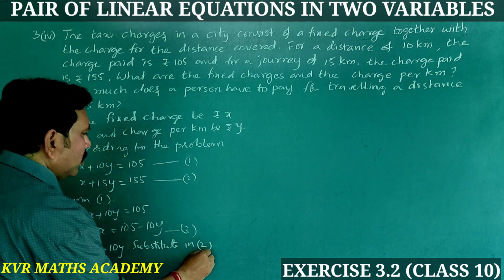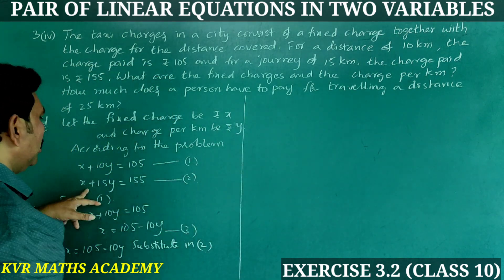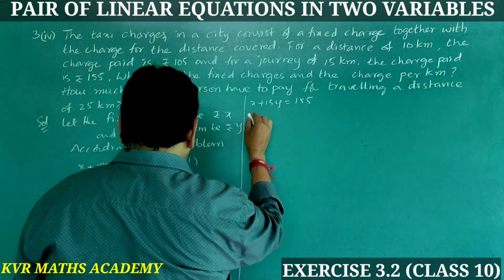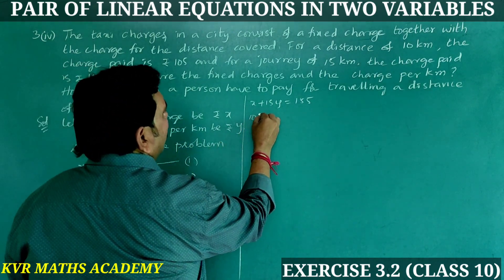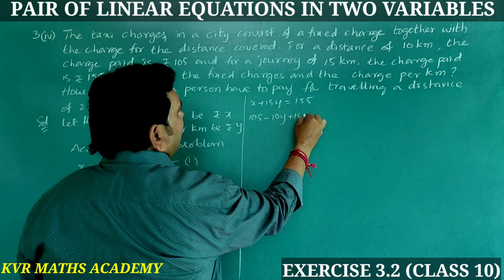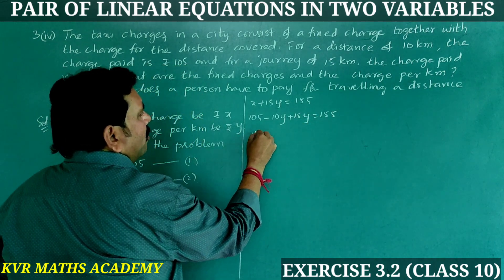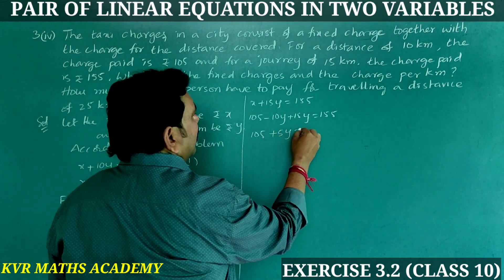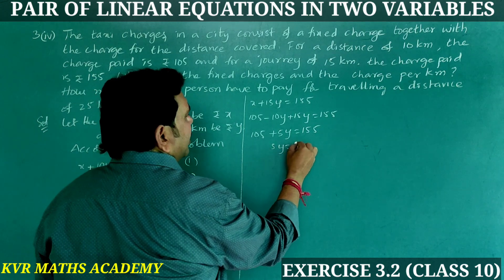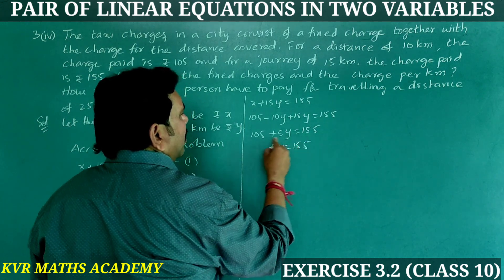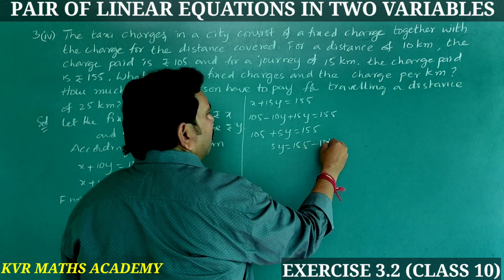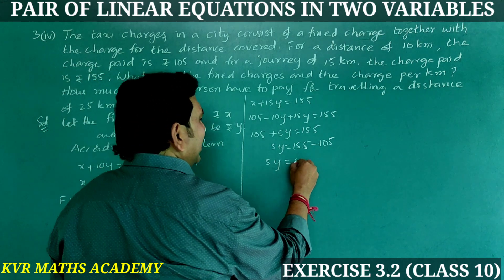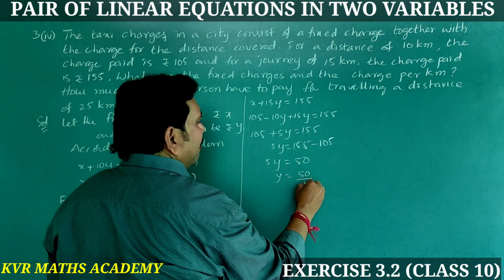Substitute into equation 2: X + 15Y = 155. X equals 105 minus 10Y, so (105 minus 10Y) + 15Y = 155. That gives 105 + 5Y = 155. So 5Y = 155 minus 105, which is 50. Y = 50 divided by 5, that equals 10. So charge per kilometer is Rs. 10.